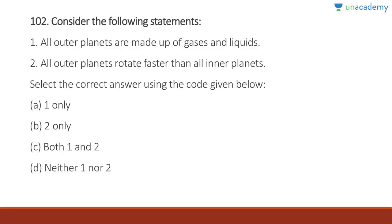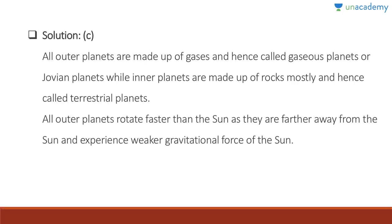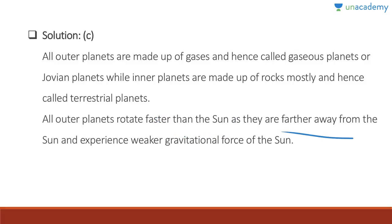Question 102: All the outer planets are made up of gases and liquids, and all the outer planets rotate faster than all the inner planets — both statements are correct. Answer is C, both one and two. All the outer planets — Jupiter, Saturn, Neptune, and Uranus — are called gas giants or Jovian planets, while inner planets are mostly rock and are called terrestrial planets. All outer planets rotate faster than inner planets because they are farther from the sun and experience weaker gravitational force.